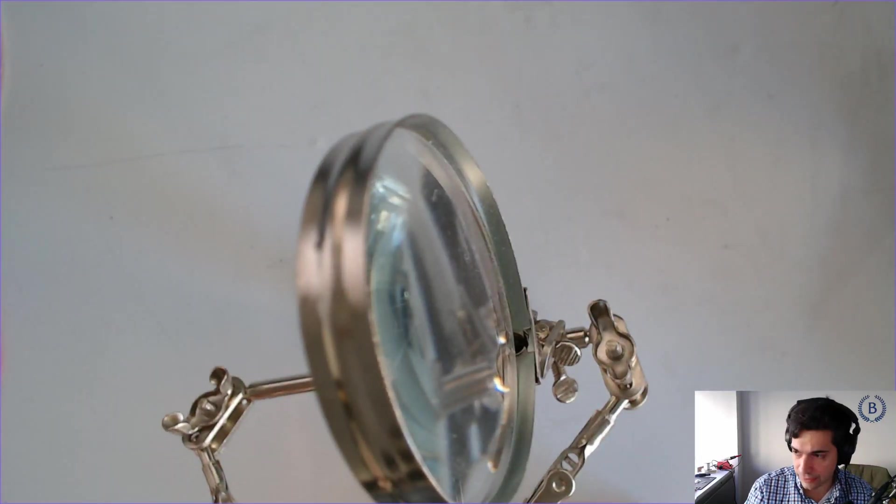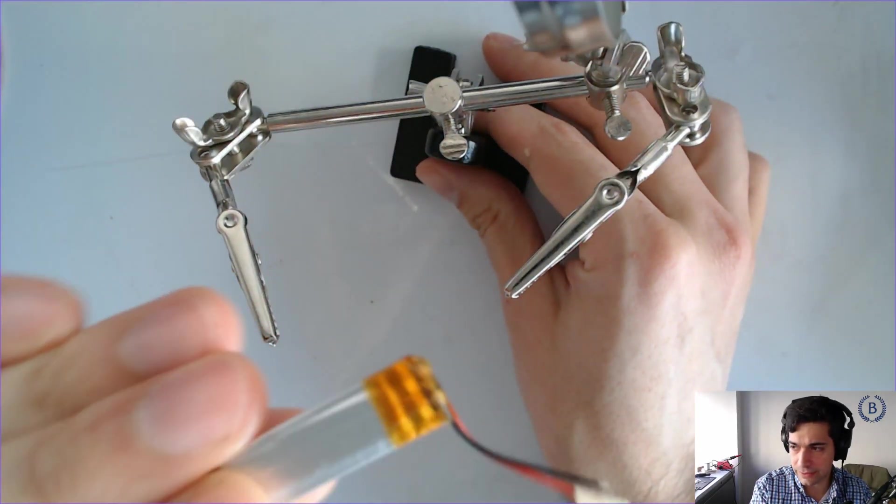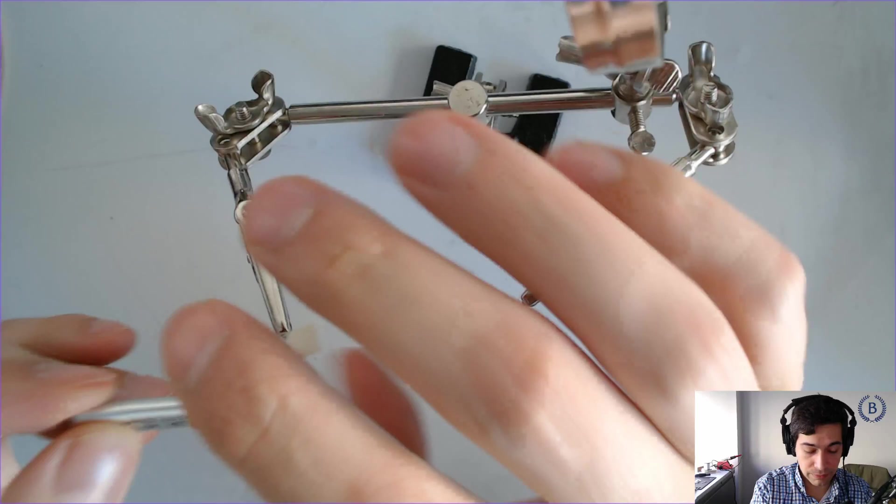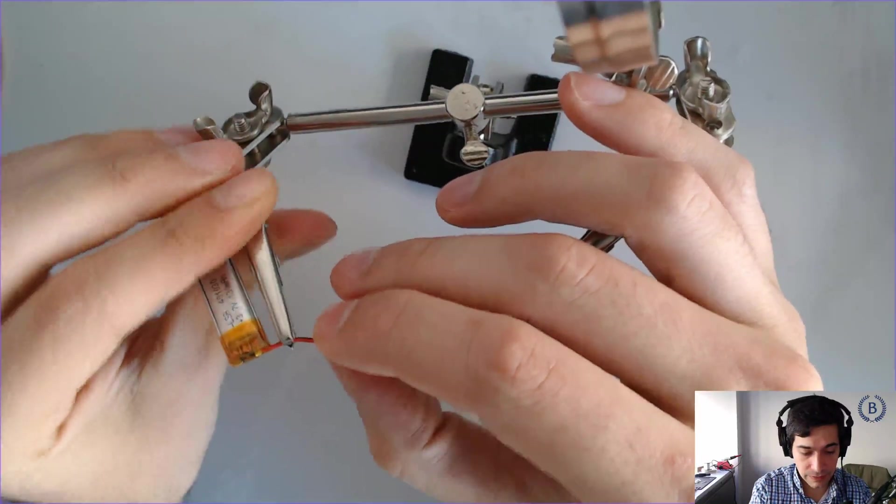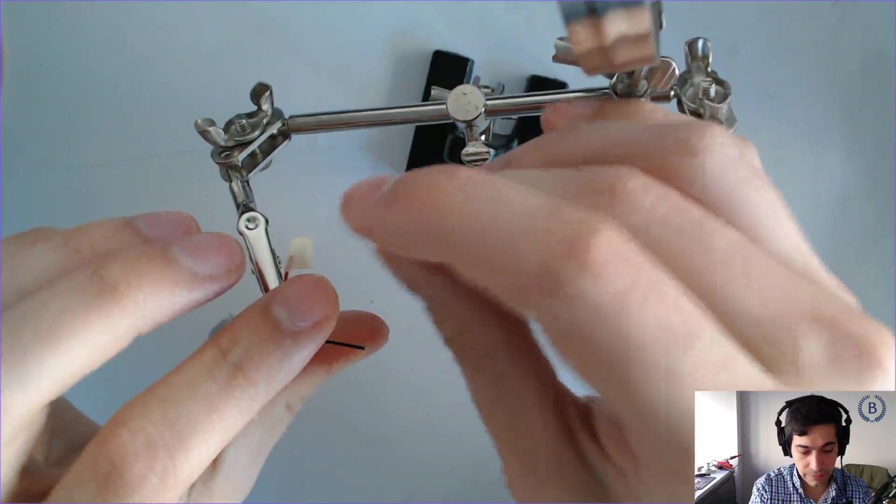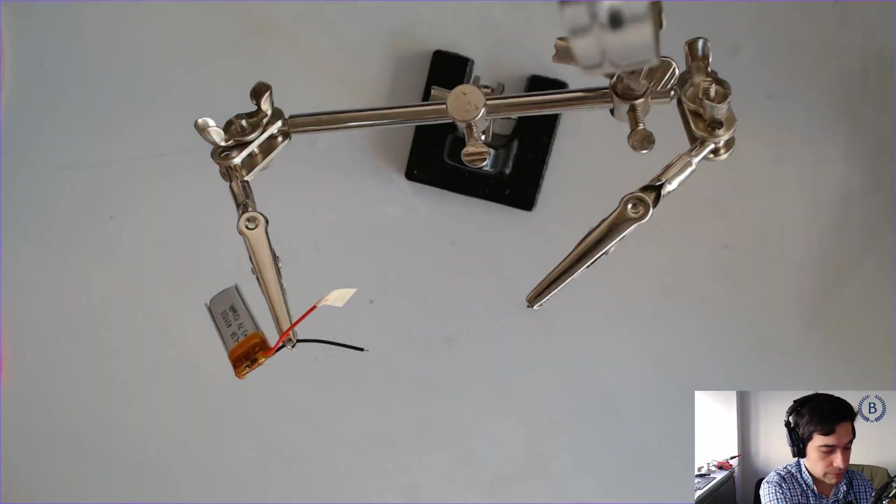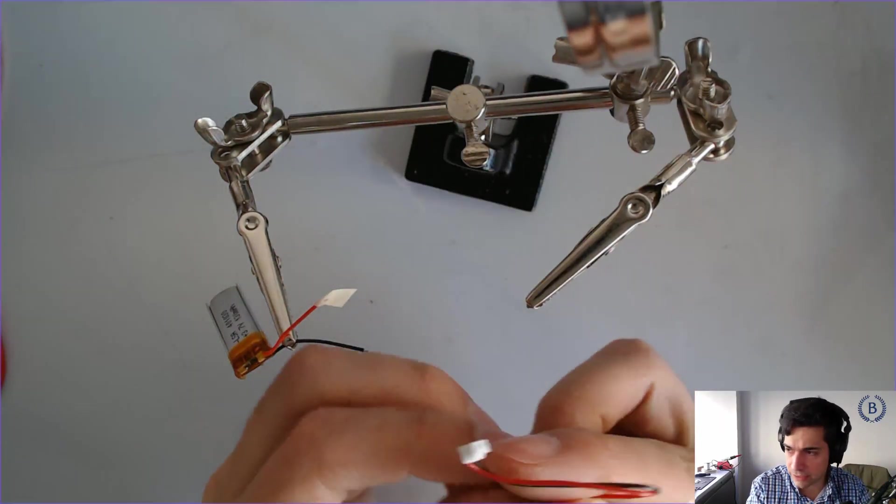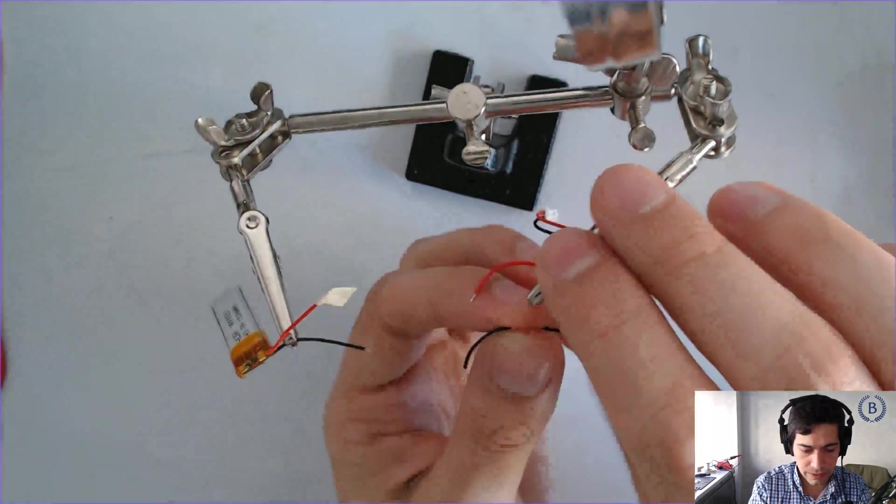So how do we solder this up? We're going to start with our battery. I'm going to put this in our helping hands. We'll start with just the black wire here, move that one out of the way, and we're going to use the JST connector that came with our ESP32. We're going to hook this up as well.